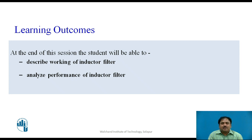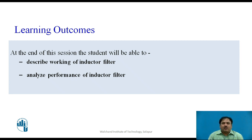Since the input power is AC, we use a rectifier. The rectifier output has two components: one is DC and the other is AC. DC is the required component that we supply to the load, and we have to remove all the AC component from the load. To remove this unwanted AC component, we use a circuit called a filter. The filter circuit is created using electronic components — either an inductor or a capacitor, or both together. In this video, we focus mainly on the inductor filter.